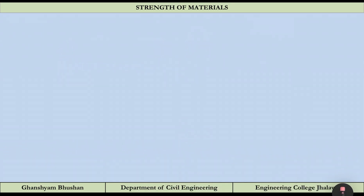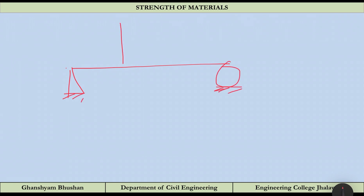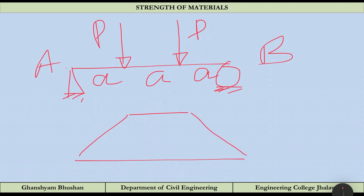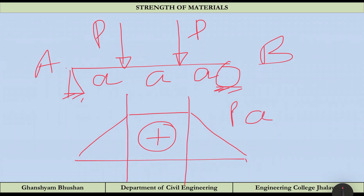Another case: if a beam has a hinge support and a roller support with loads P at both ends over a length A, and a middle span B, you will find the bending moment diagram is hogging and equals PA. In the mid-section, the bending moment is constant — PA here and PA there — showing a case of pure bending.